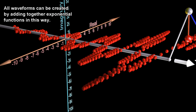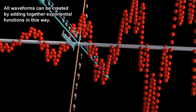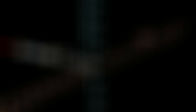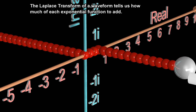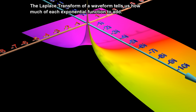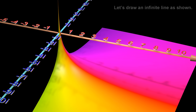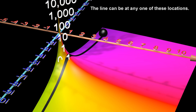All waveforms can be created by adding together exponential functions in this way. The Laplace transform of a waveform tells us how much of each exponential function to add. Let's draw an infinite line as shown.